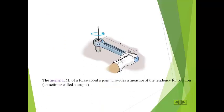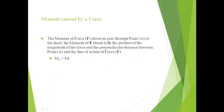The moment M of a force about a point provides a measure of the tendency for rotation, sometimes called a torque. So, moment is equal to F into D, where F is the magnitude of the force and D is the perpendicular distance from the point about which moment is taken to the line of action of the force. The moment of force F about an axis through point A — the moment of F about A — is the product of the magnitude of the force and the perpendicular distance between point A and the line of action of force F. So, moment about A equals F × D.